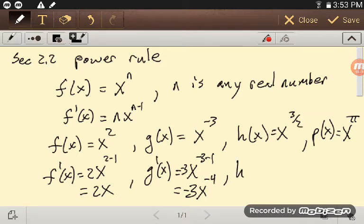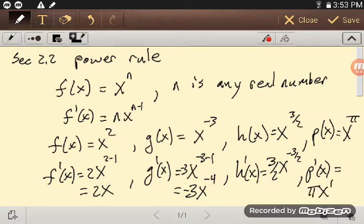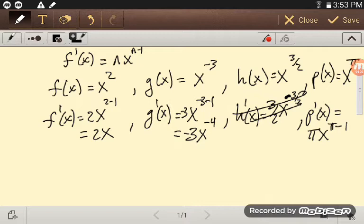h prime of x here is 3 halves, x to the minus 3 halves, and then finally, p prime of x is equal to, I'll have to put it down here, I have pi x to the pi minus 1. Why did I say minus 3 halves? Back up here, I'm not sure what I did there. I think I was just writing stuff down. Sorry about that. It's probably not the last time I'll screw things up.